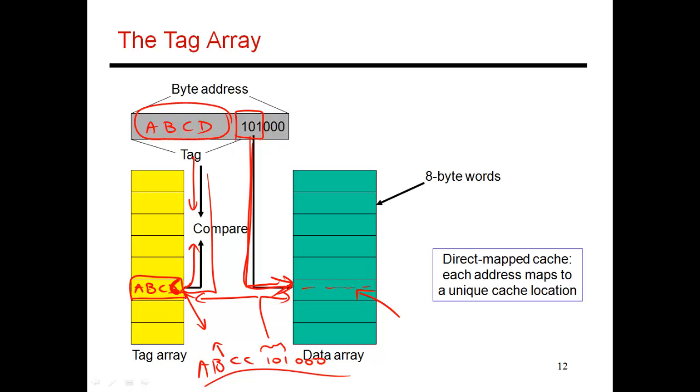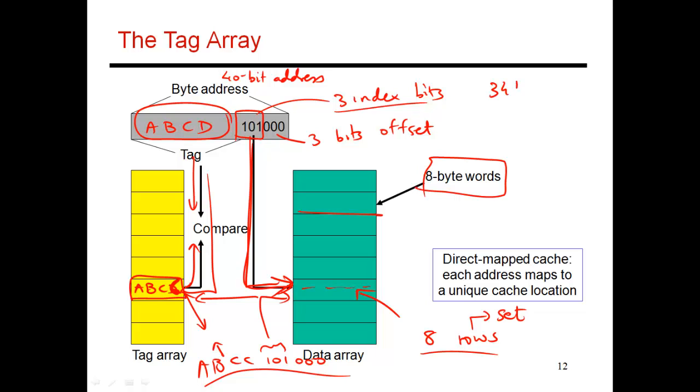So the tag array helps me keep track of what are the few elements that have been kept in the cache. I use the index bits to pick out the particular entry, and I use the tag bits to discriminate between these different blocks. So any address is broken up into these three different fields. I said that I'm assuming a 40-bit address. So three bits are used for offset because I'm having an 8-byte word in every single row.